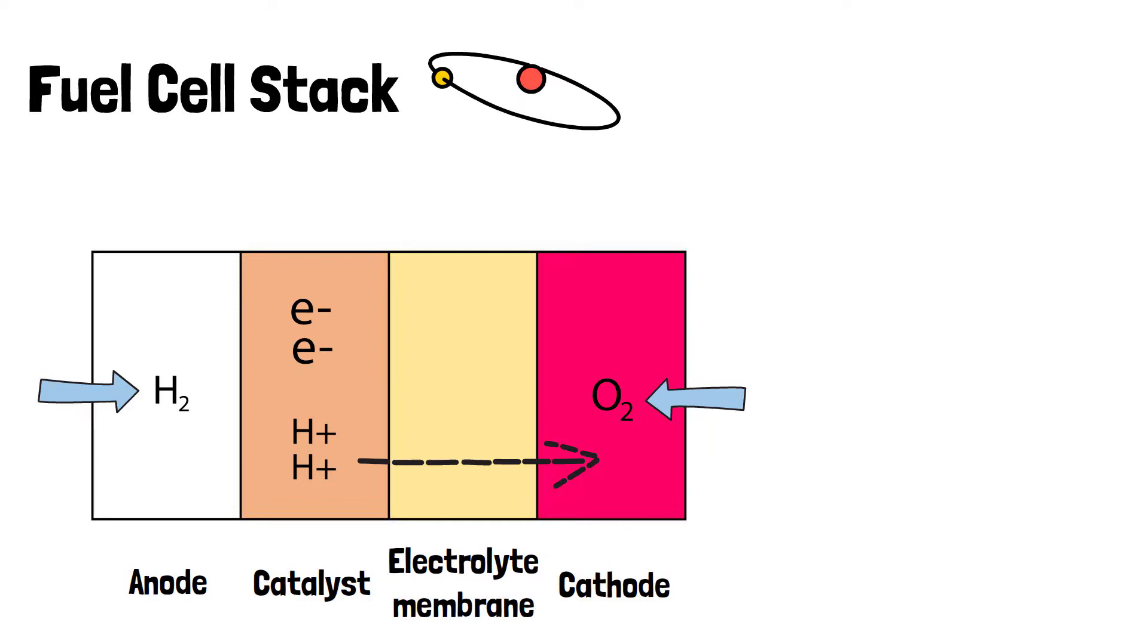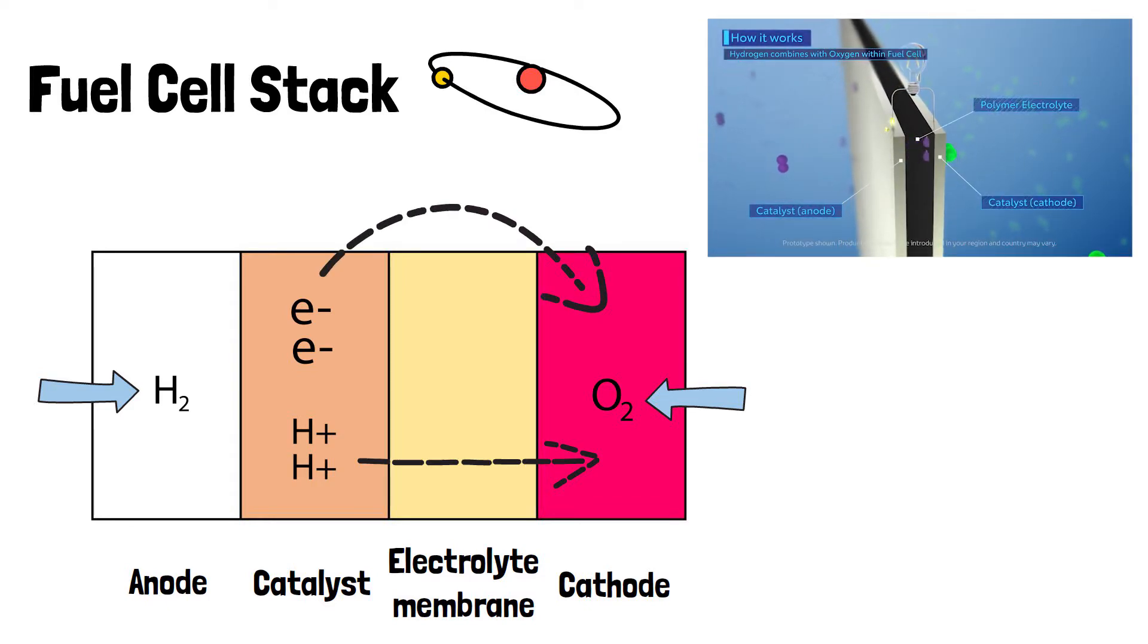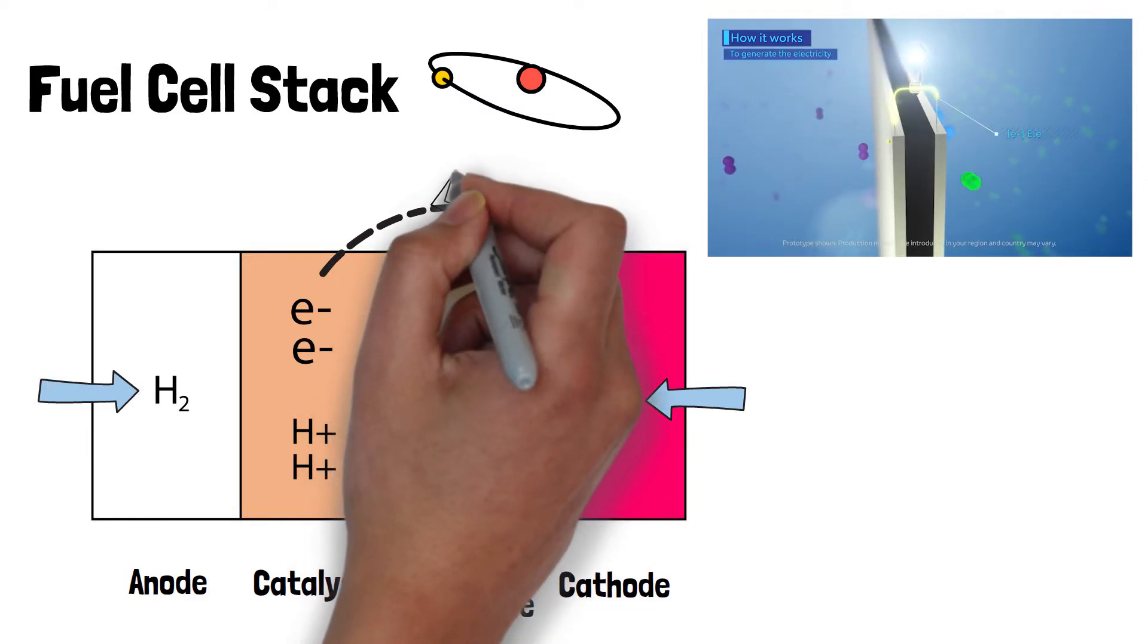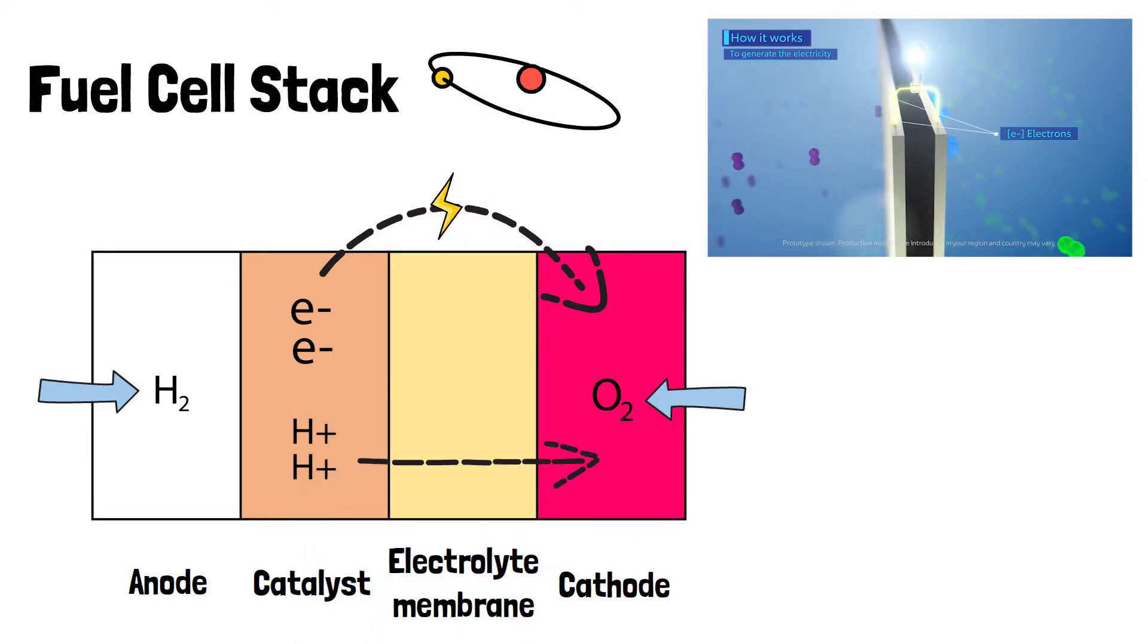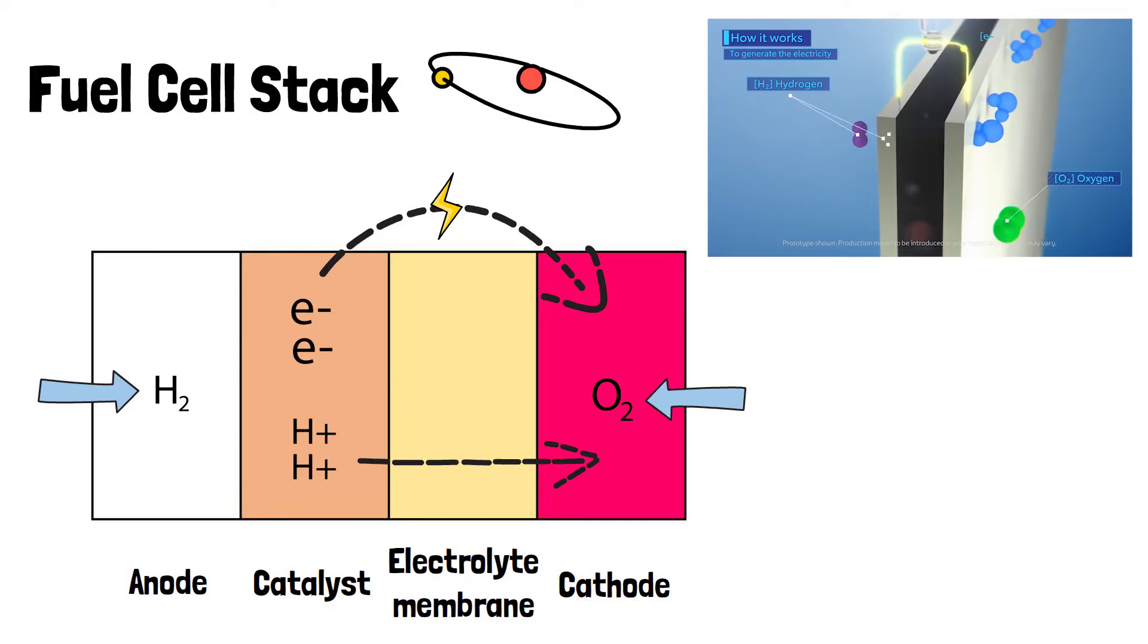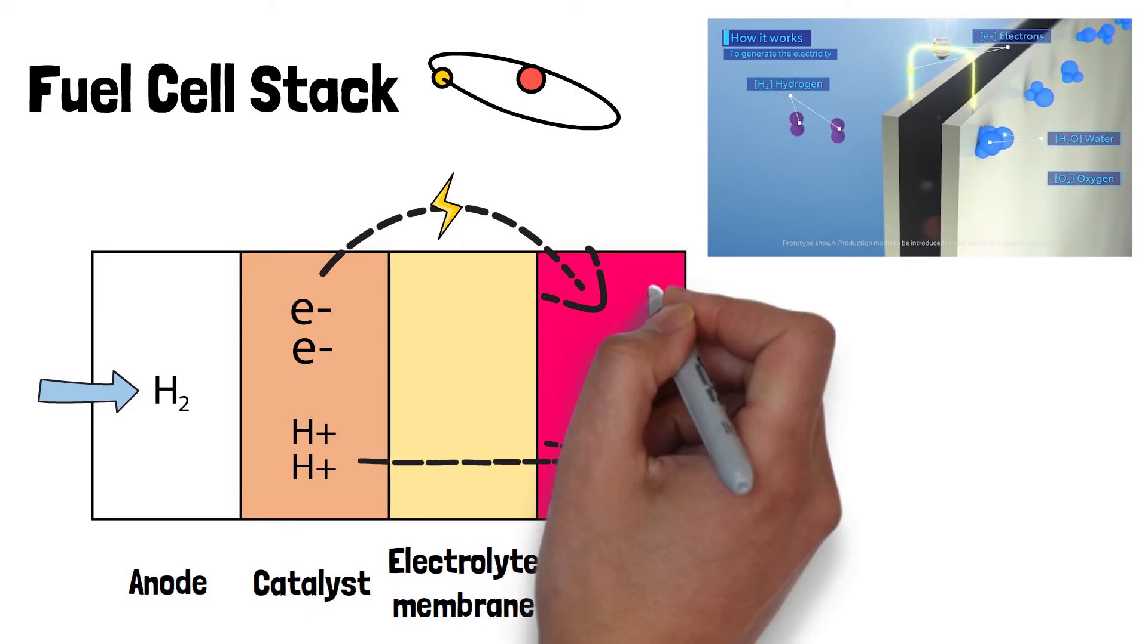Now something to note. Up to now I've been saying ions and not atoms. Atoms are neutral since they contain the same number of protons as electrons. Ions, on the other hand, have either a negative or positive charge. Since our hydrogen ions are positive, they still cannot react with the oxygen. The solution is to move the electrons over from the anode side. And what's another term for moving electrons? That's right, electricity. If we place something in the current's path, in this case a motor, it can be used to power it. When the electrons finally meet with the hydrogen ions and oxygen, they react to form water.